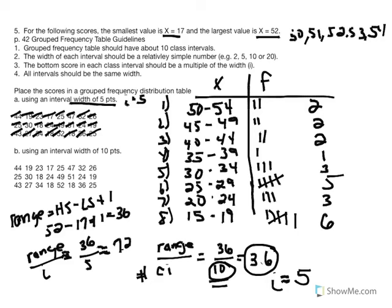A good way to check that you didn't omit any scores is to take the sum of frequencies, which equals N. Adding the frequency column: 2+2+2+1+3+5+3+6 = 24. And checking the original data: 3 columns times 8 scores equals 24. So we've confirmed all scores are accounted for. Next I'm going to erase all of this and use the same data set to construct a grouped frequency distribution table using i=10.